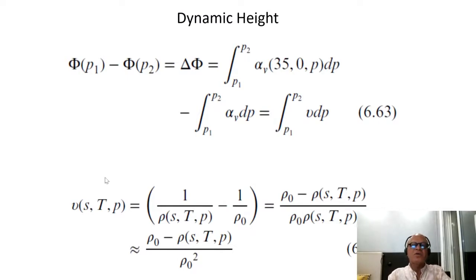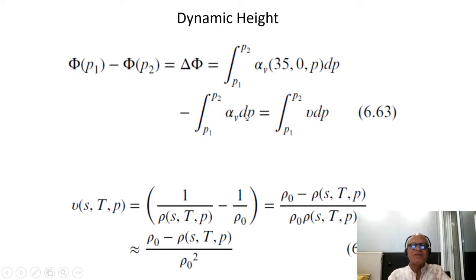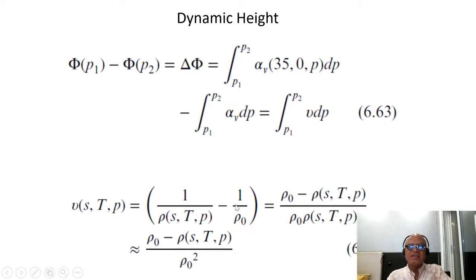The concept of dynamic height comes out of this, where φ(p1) minus φ(p2), or Δφ, can be written as the integral from p1 to p2 of a reference specific volume α_0 at salinity 35, reference temperature zero, and pressure p, minus the integral of α_v dp. This can be written as ν dp where ν is a function of salinity, temperature, and pressure, and that is 1/ρ(S,T,P) minus 1/ρ_0, which can be rewritten as (ρ_0 minus ρ_STP) divided by (ρ_0 times ρ_STP).